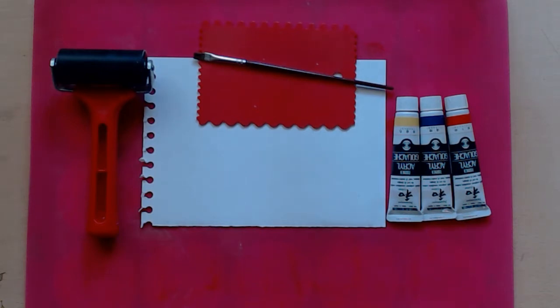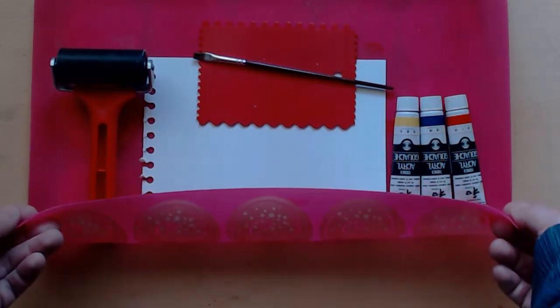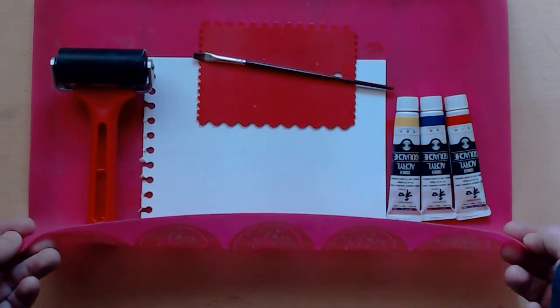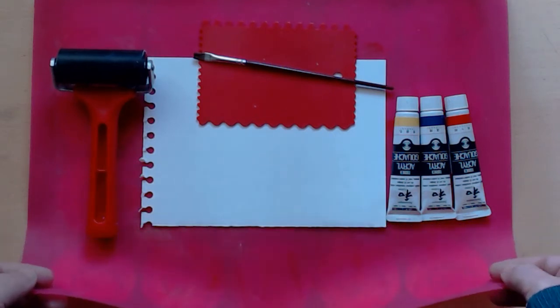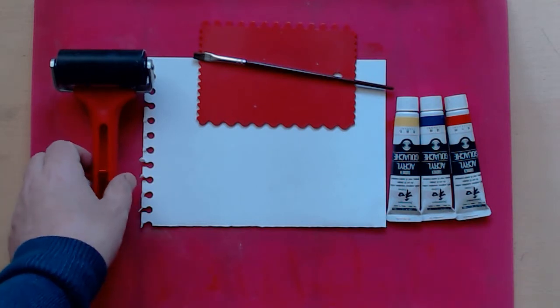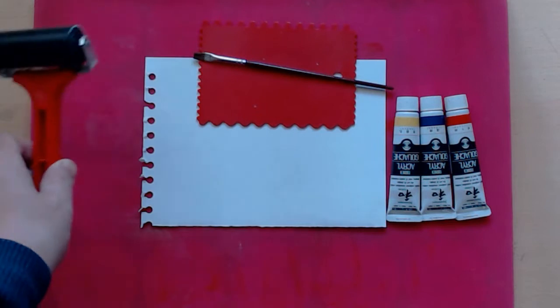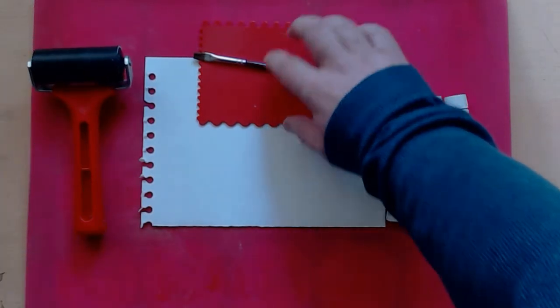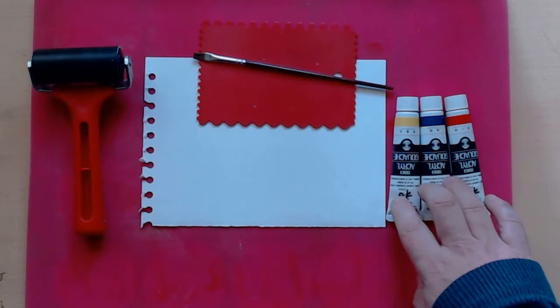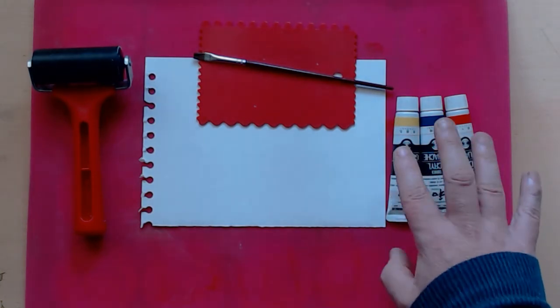So let's look at some of the equipment that you might need. Obviously you're going to need a silicon mat that they use for oven baking, a brayer, some scrappy tools, your paper, and what you would normally use as ink. Now this is acrylic paint.